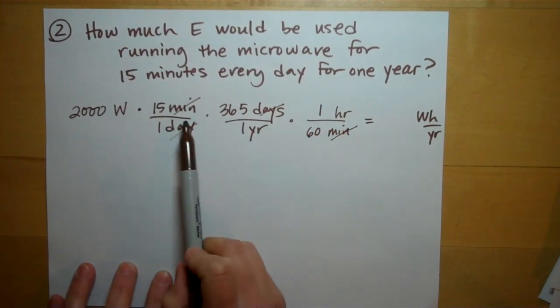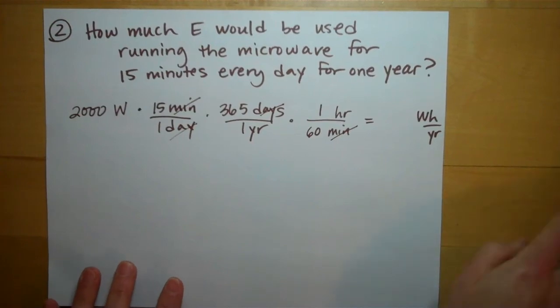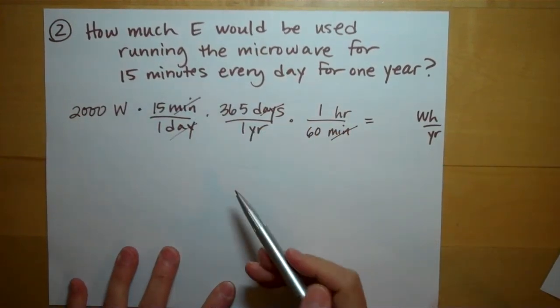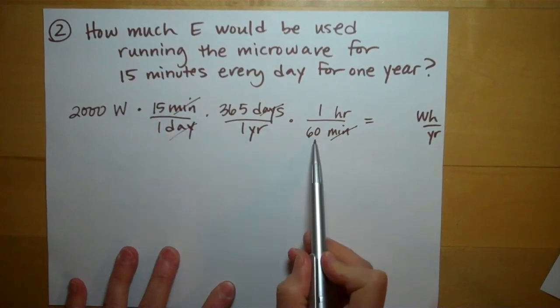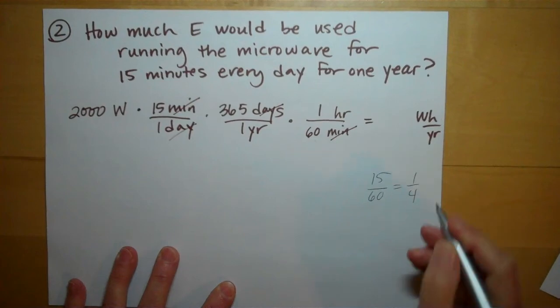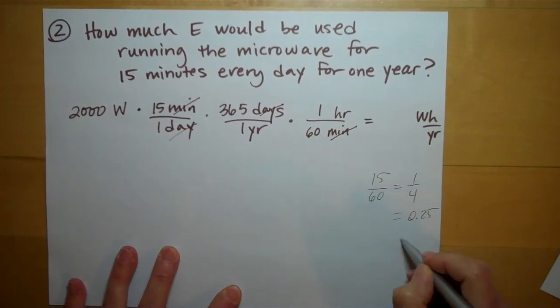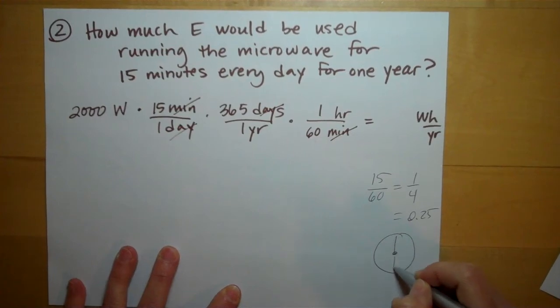One thing I want you to know, you could skip this step entirely if you change this unit right off the bat. And some of you, I'm sure, might. You can see 15 divided by 60, right? 15 divided by 60 is one quarter, which is 0.25, right? That's what 15 minutes is. It's a quarter of an hour.